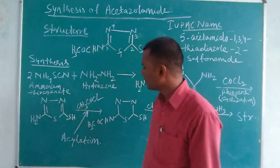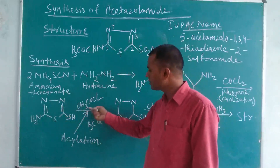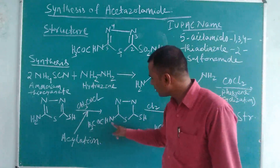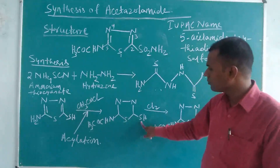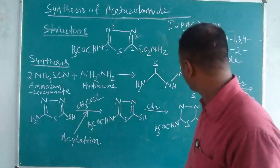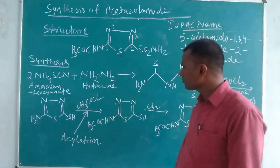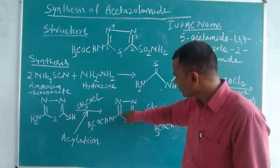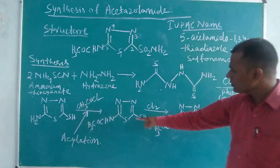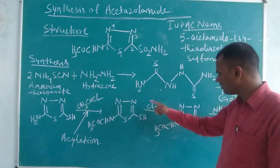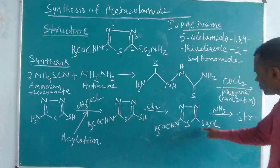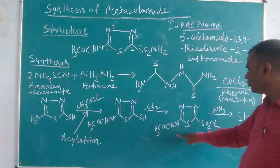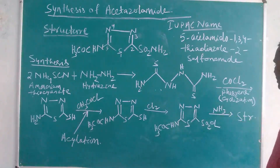When this compound is acylated using acetyl chloride, it gives an acylated product: 2-acetamido-5-mercapto-1,3,4-thiadiazole. When this acetyl derivative is chlorinated using chlorine, it gives the sulfonyl chloride structure. When this sulfonyl chloride is then ammoniated using ammonia, it gives the final structure of acetazolamide.